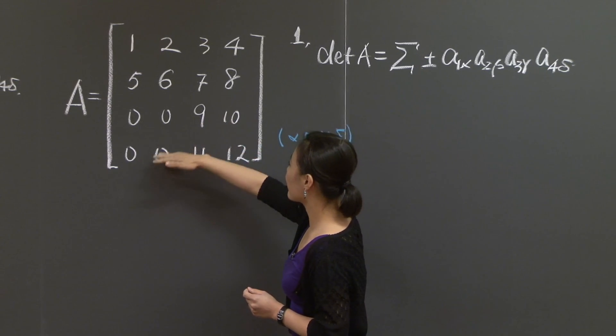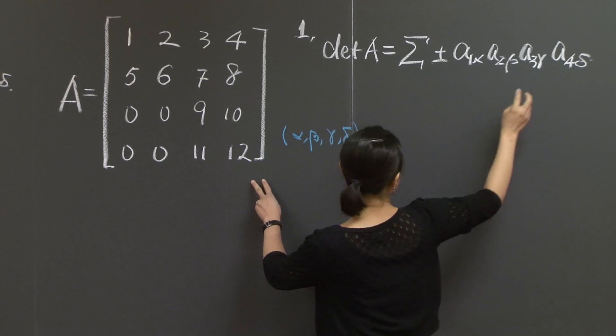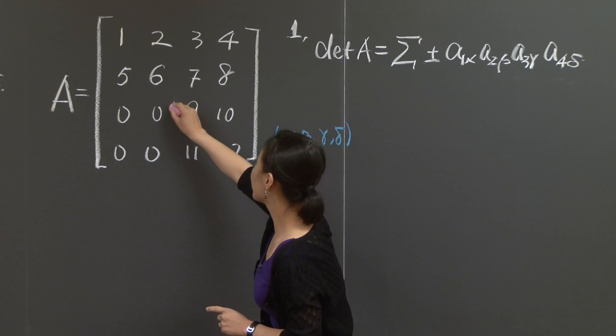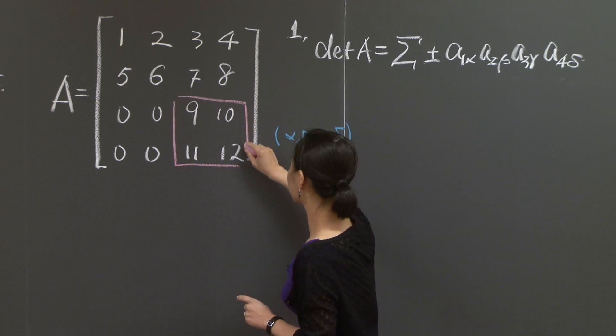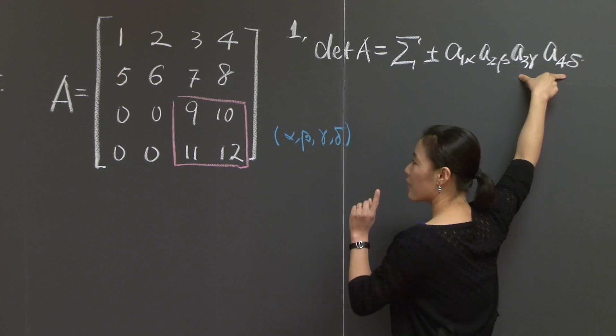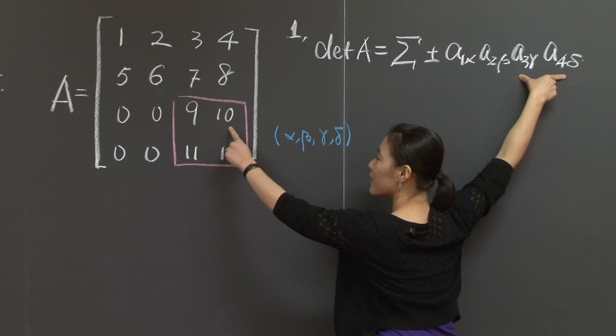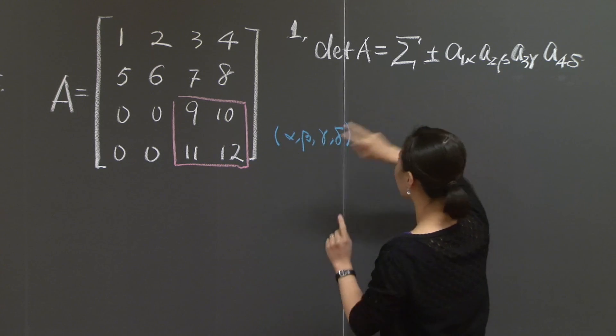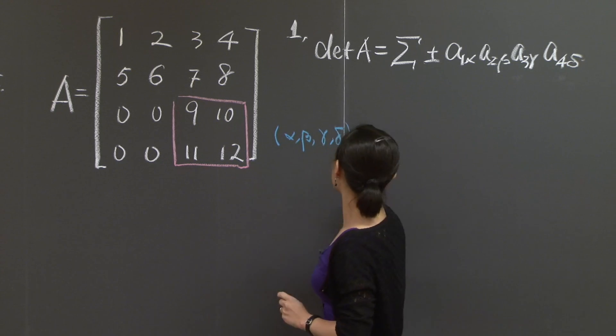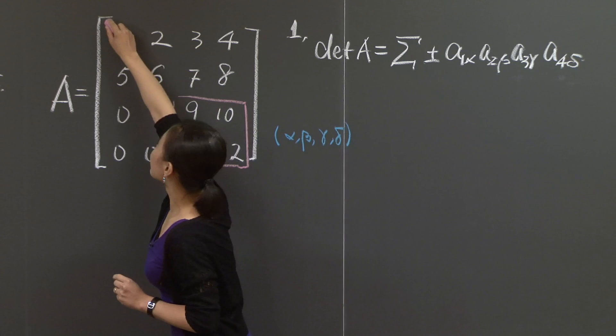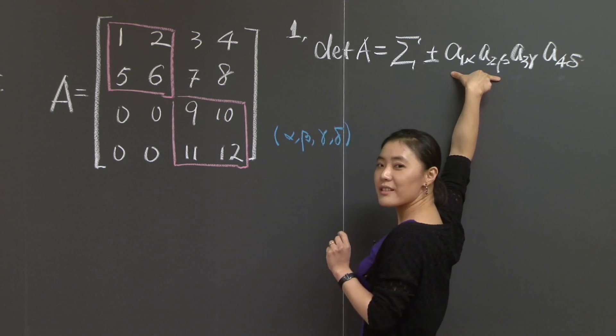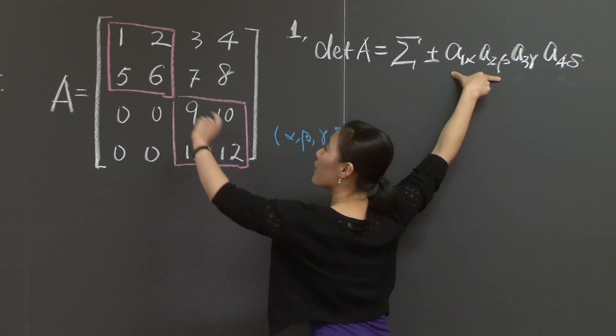You have 0 entries in these four spots. They all occur in the third row and the fourth row, which means when you make your choice of the last two entries, in order not to get 0, you can only choose within this red box. The choice of the last two entries can only be either 9-12 or 10-11.